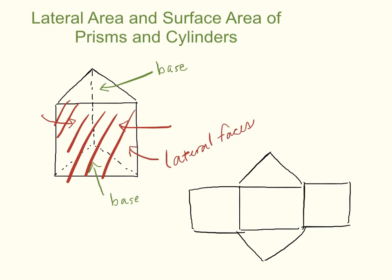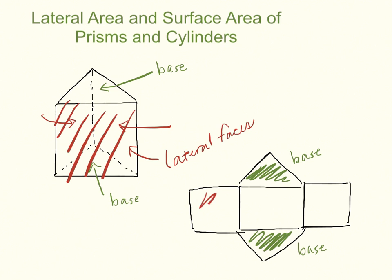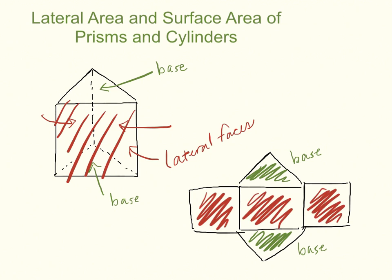If we were to cut along the edges of the prism and open it up, this is what we would get — what's called a net of the prism. In this net, this would be a base here and this would be a base here, and the lateral faces would be here, here, and here. There are three lateral faces because it has a three-sided, triangular base.